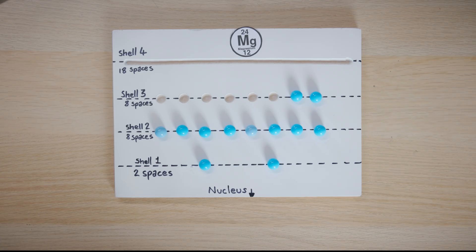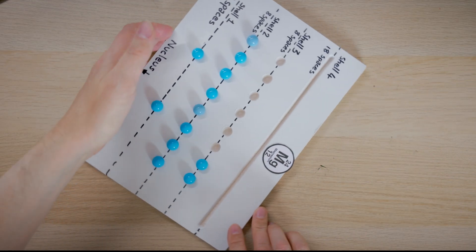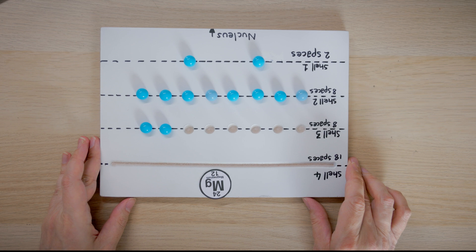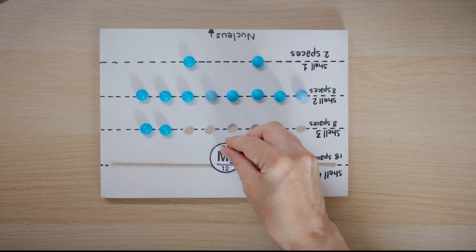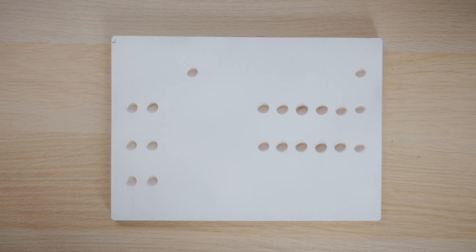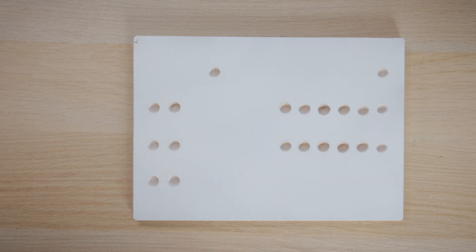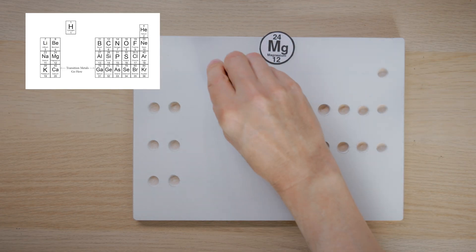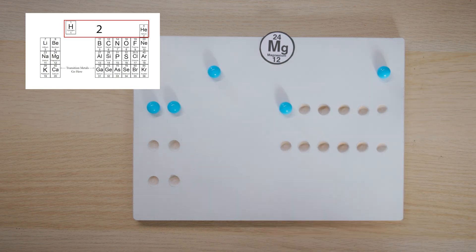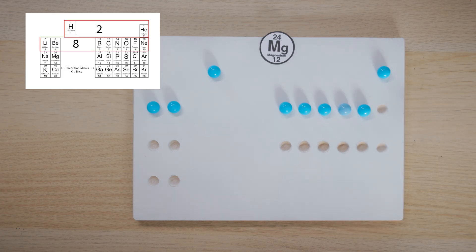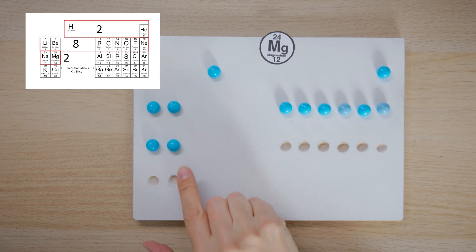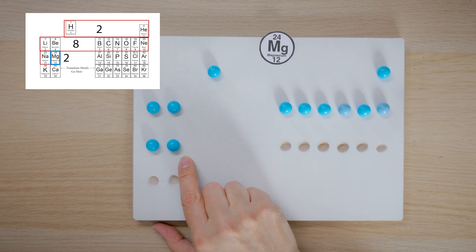I'm just going to turn this grid around for you. And this pattern might start to look a little bit familiar - have a look at the same thing here. This looks suspiciously similar to the arrangement of the elements in the periodic table. Let's just build magnesium again: 12 electrons in the configuration - two, eight, two. And wouldn't you know it, that final electron is in the same position as magnesium occupies in the periodic table.